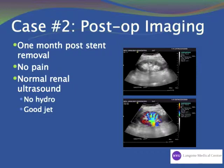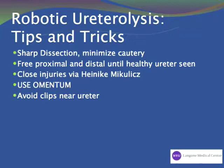Some tips and tricks to ureterolysis: always use sharp dissection and minimize cautery around the ureter. Free the proximal and distal ureters which are normal, then work toward the middle toward the abnormal ureter. Close injuries using a Heineke-Mikulicz technique, and use judicious omentum on a well-vascularized flap.